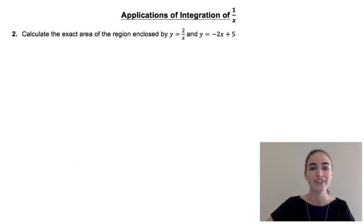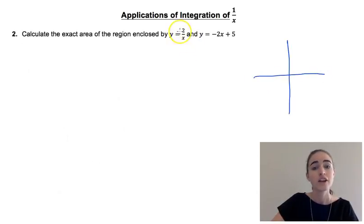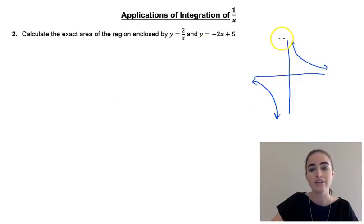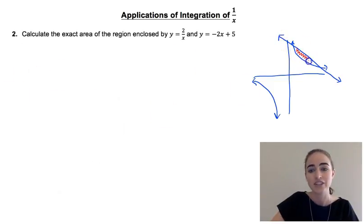Our second question asks us to calculate the area of the region enclosed by the curve y equals 2 over x and the straight line y equals minus 2x plus 5. First we're going to draw ourselves a quick little sketch. The curve y equals 2 over x is going to be a hyperbola and because it's positive it's going to be in the first and third quadrants, and the straight line y equals minus 2x plus 5 is going to go down somewhere — though it doesn't look very straight in my diagram.